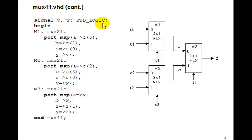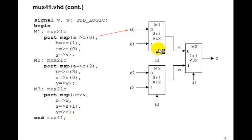Here we have signal v and w of type standard logic. In the port map statement, the values on the left-hand side — a, b, s, and y — are the component names. That's the name of the component that we had for the 2-to-1 mux, so each one of them has a, b, s, y. For m1: a gets connected to c0, b gets connected to c1, s gets connected to s0, and y gets connected to signal v that we declared.